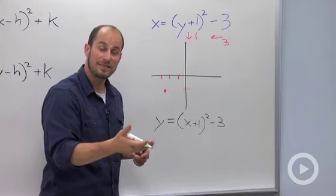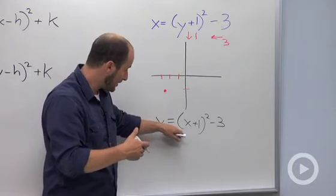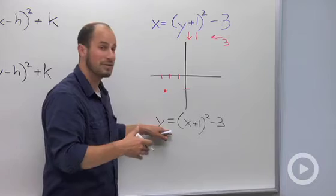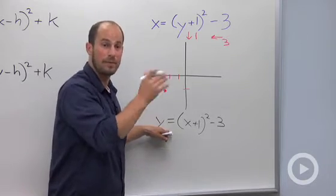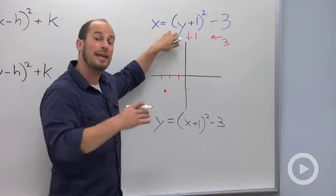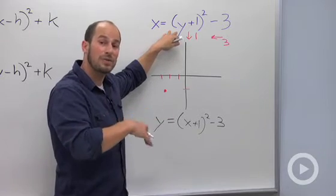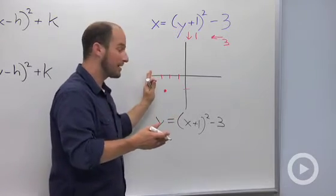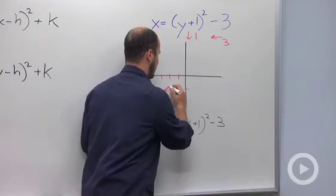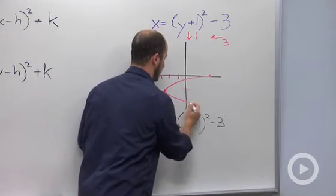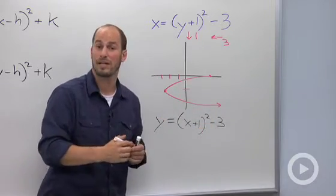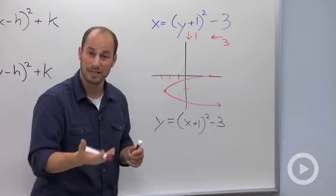Our coefficient is positive, which tells us we have an upward-facing parabola where y values are getting bigger. Here we have no additional coefficient, which tells us the opposite — our x-coordinates are going to be getting bigger, so we're dealing with the parabola going in that direction.